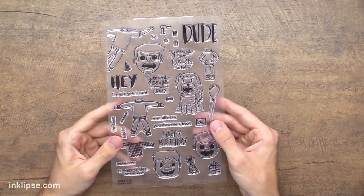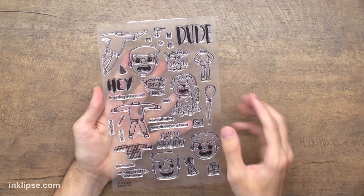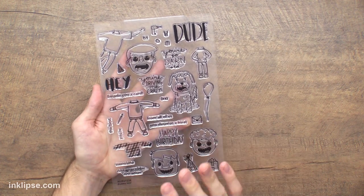In today's video, I wanted to use that flip card die with the dudes 2 stamp set because right when I pulled it out of the package I had the perfect idea. So without further ado, let's get right on into it.